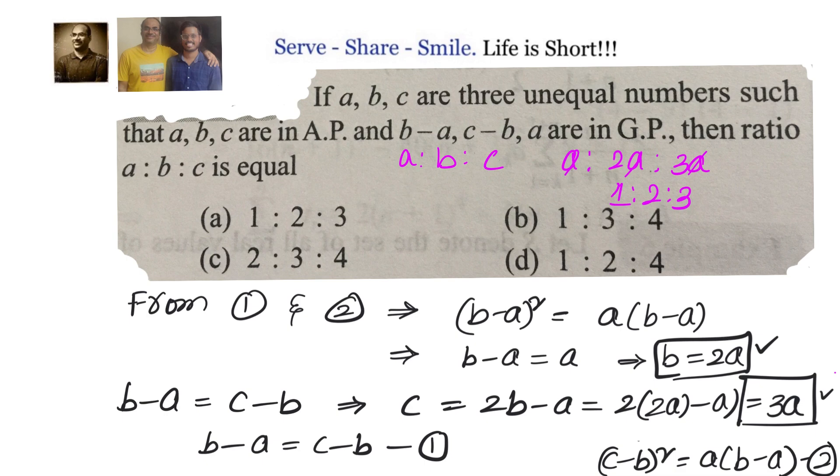Cancel out A value throughout, we will get 1 is to 2 is to 3 as the ratio.